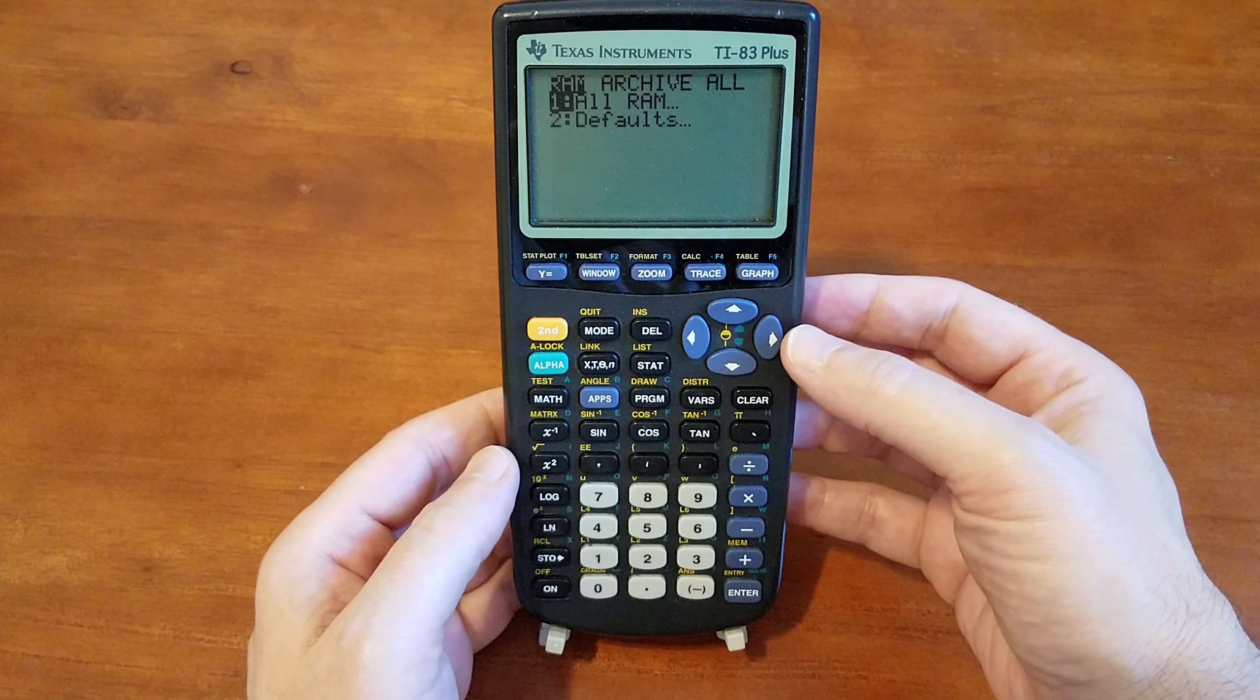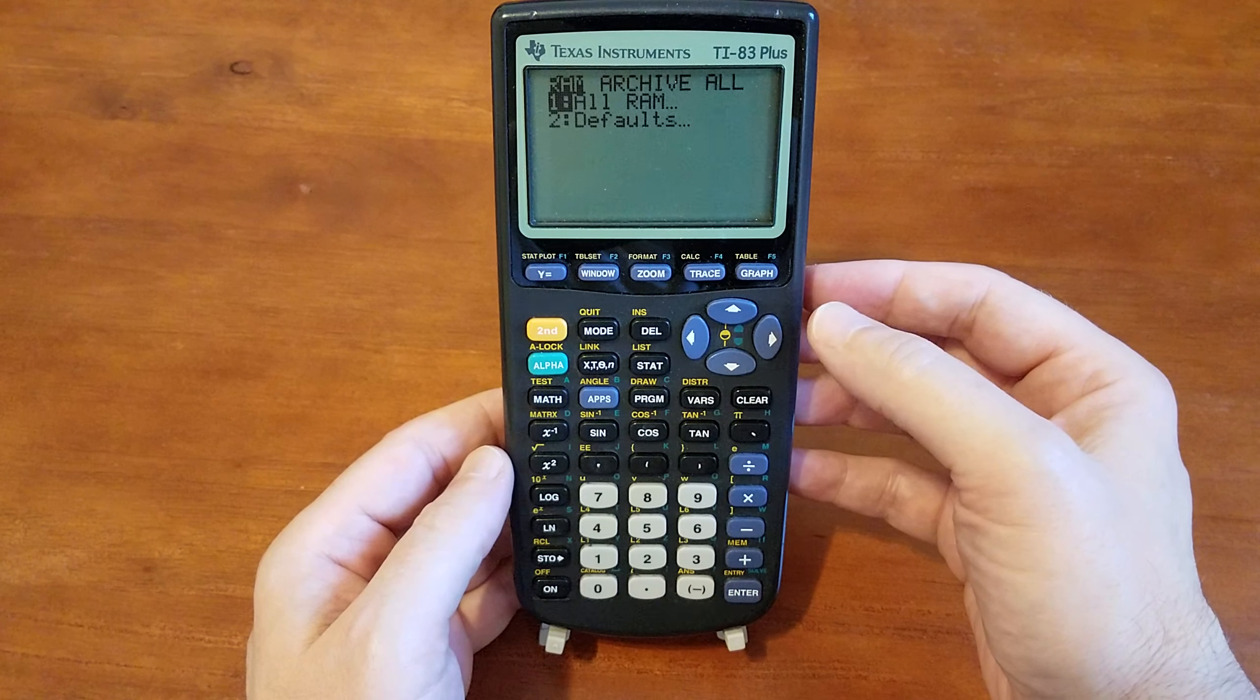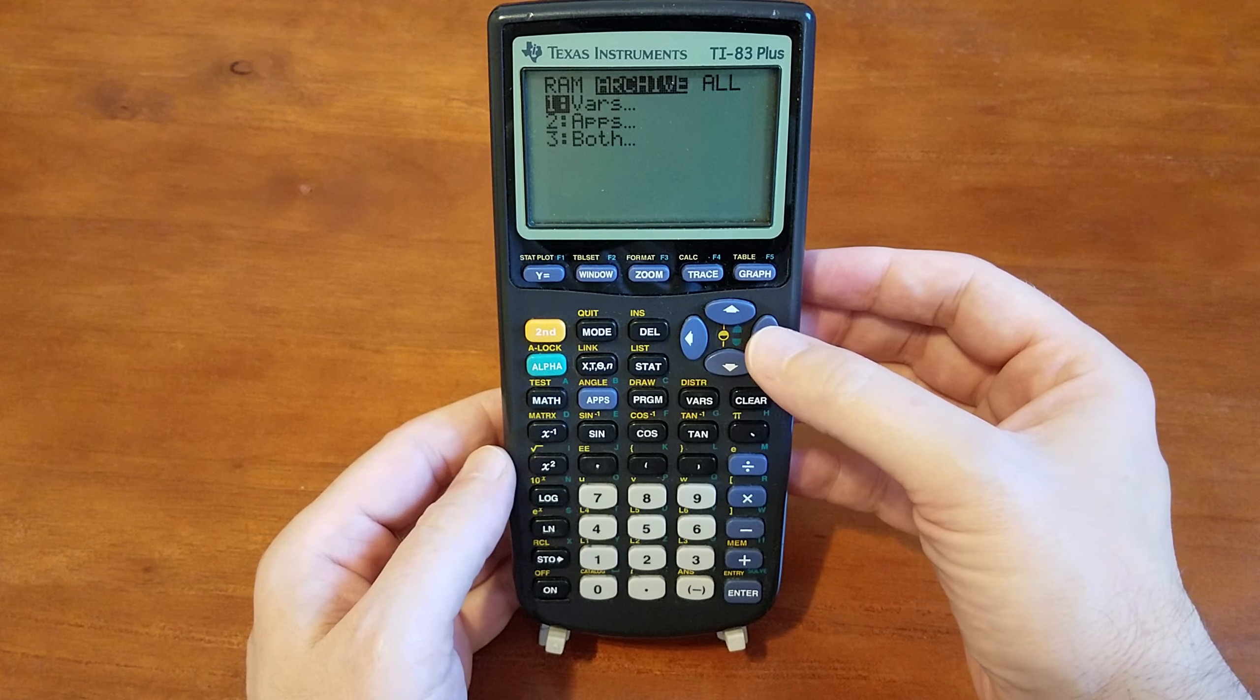Then you want to tap this little arrow to the right. You want to tap that two times. One, two.